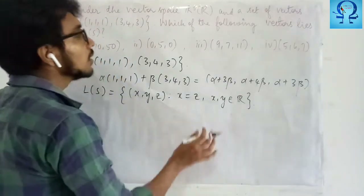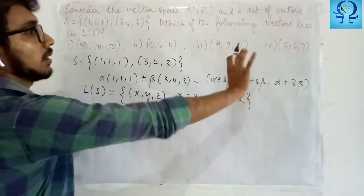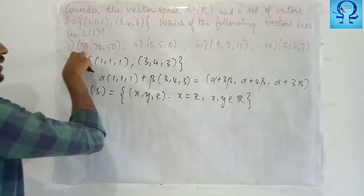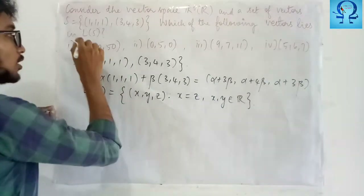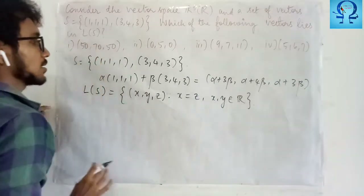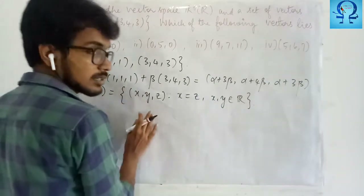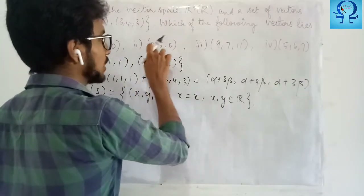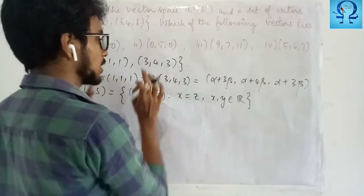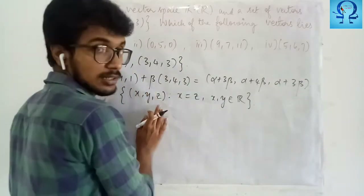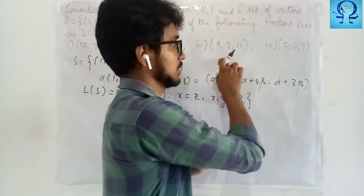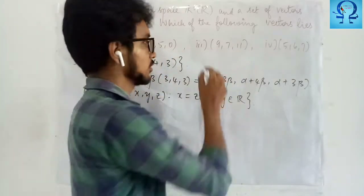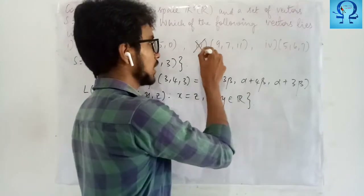In the first option, the first entry and the last entry are the same, so this has the possibility to be in the span. Here also, the first and last entries are the same, so it has the possibility to be in the span. In the third option, the first and last entries are different, so it cannot be in the span. Here also, the first and the last entry are different, so it cannot be in the span.